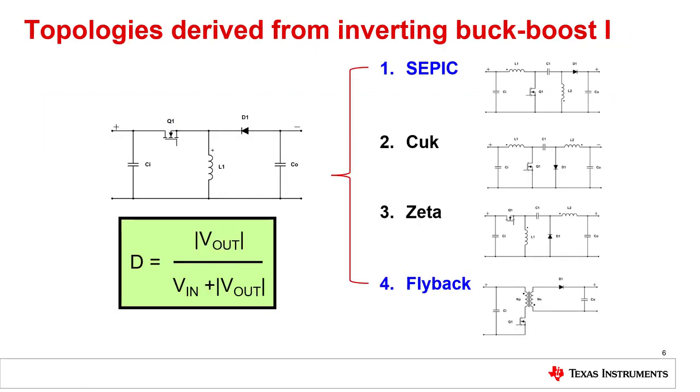On this slide you can see the duty cycle calculation for a buck-boost converter. From that you can see that the input voltage can be bigger or smaller or equal to the output voltage. So if the duty cycle is 0.5, the input voltage and the output voltage are equal. If the duty cycle is smaller than 0.5, the input voltage is bigger than the output voltage. And if the duty cycle is bigger than 0.5, the input voltage is smaller than the output voltage.